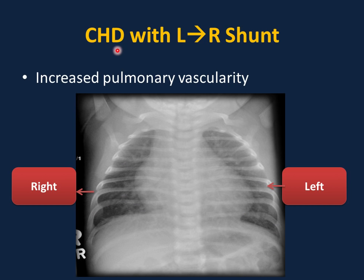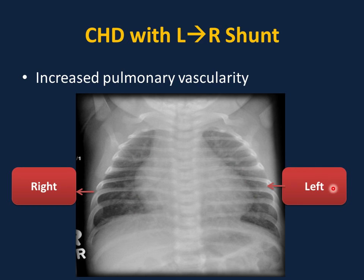It is very important to know the x-ray finding in cases of congenital heart defects with left-to-right shunt, which shows increased pulmonary vascularity. For example, in this case you will see cardiomegaly with increased pulmonary vascularity, which is suggestive of a congenital heart defect with left-to-right shunt.